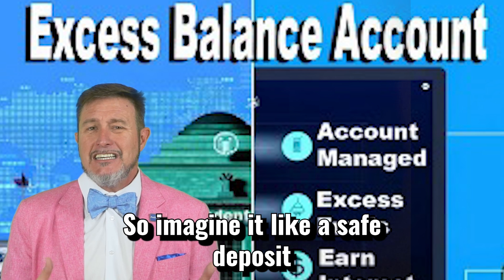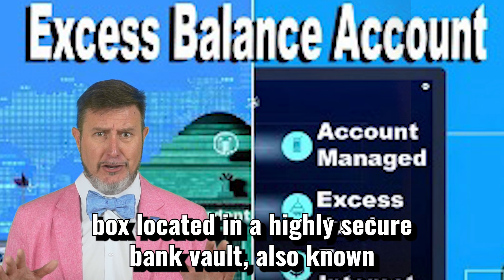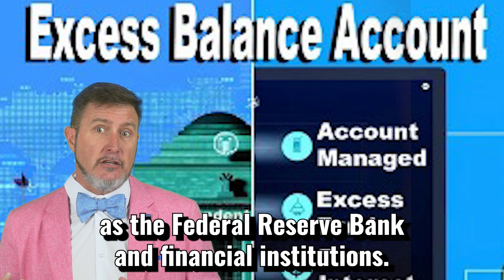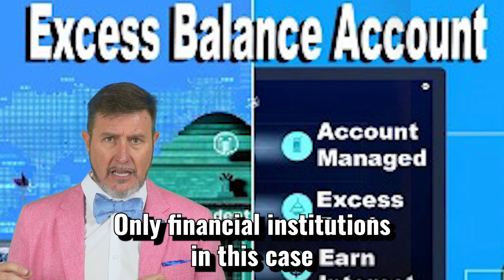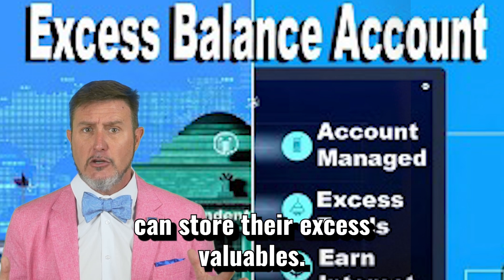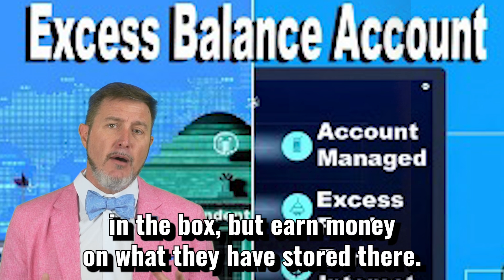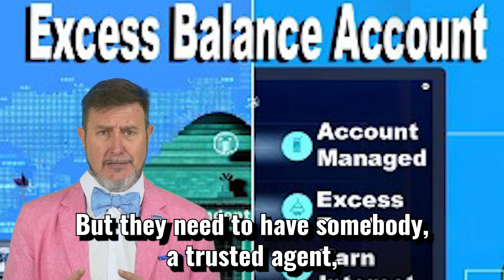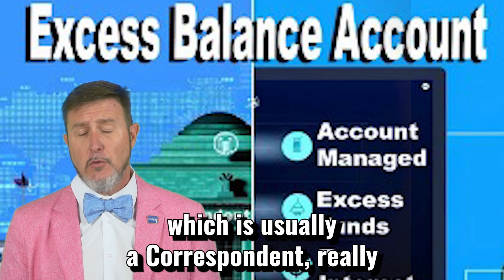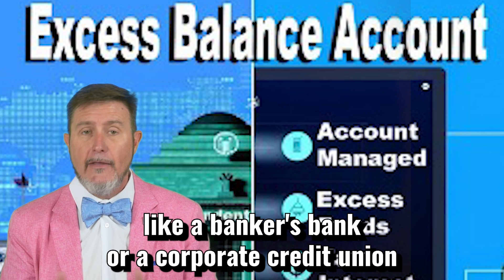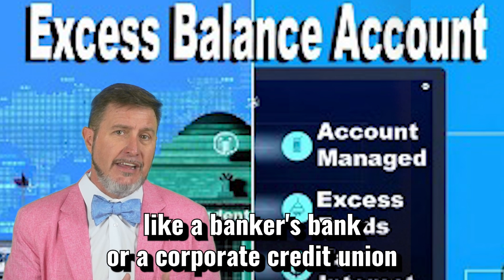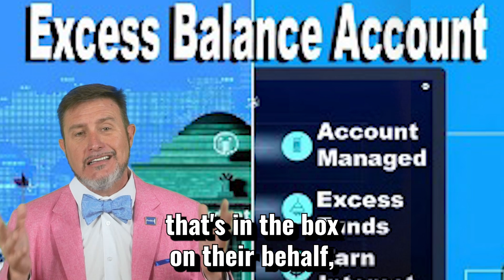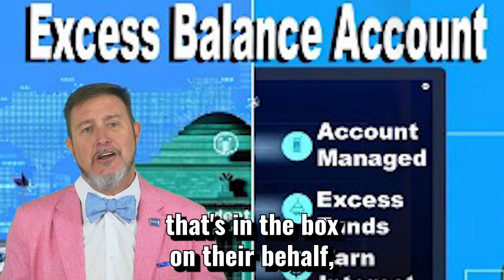Imagine it like a safe deposit box located in a highly secure bank vault — also known as the Federal Reserve Bank. Financial institutions, only financial institutions, can store their excess valuables — excess funds — in the box, and earn money on what they have stored there. But they need to have somebody, a trusted agent, which is usually a correspondent — like a bankers bank or corporate credit union — to be able to access and manage the valuables, the money, that's in the box on their behalf.